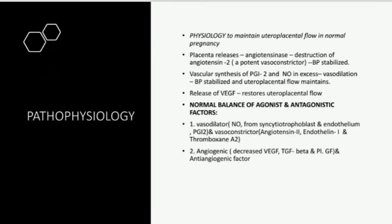Now comes pathophysiology of preeclampsia. It is very important to first understand the physiology of normal pregnancy and uteroplacental blood flow. To maintain uteroplacental flow in normal pregnancy: the placenta releases angiotensinase, which causes destruction of angiotensin II — a potent vasoconstrictor — so BP is stabilized. There is also vascular synthesis of PGI2 and nitric oxide in excess; these are vasodilators that cause vasodilatation and stabilize BP, maintaining uteroplacental flow. Release of vascular endothelial growth factors also restores uteroplacental flow, so there is a normal balance of agonist and antagonistic factors.